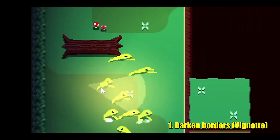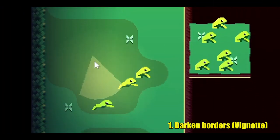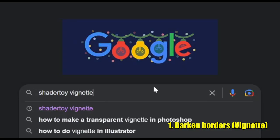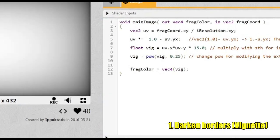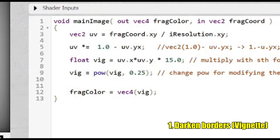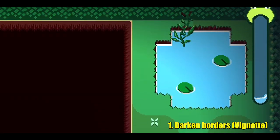First, I darken the edges. This is called a vignette. I didn't know how to make one, so I looked it up. If you're making a game, I recommend using shaders. It's going to be a common theme in this video.